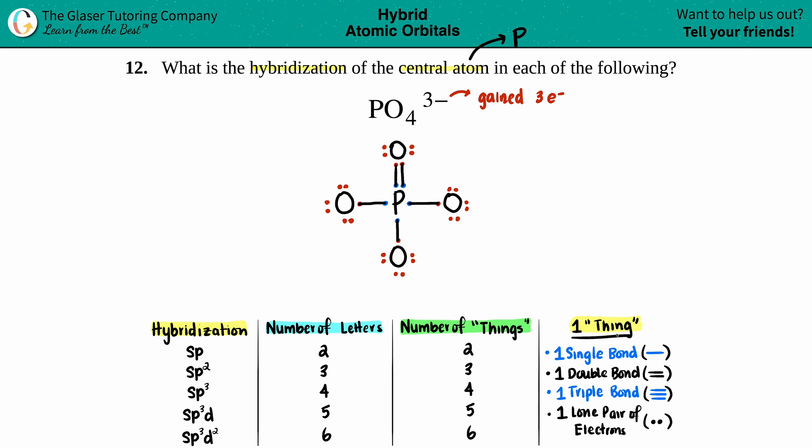Well, one thing is either one single bond, one whole double bond—even though there's two lines here, it's still classified as one thing—one triple bond is classified as one thing, and one lone pair. So when I am looking at phosphorus, I could only see what's going on with that atom. Well, phosphorus seems like it has a single bond—that's one thing. It's got another single bond down here—that's two things. It's got one more single bond, we're up to three things now.